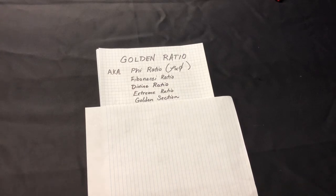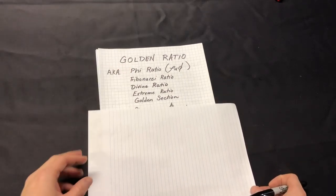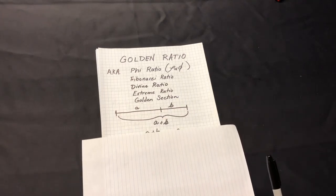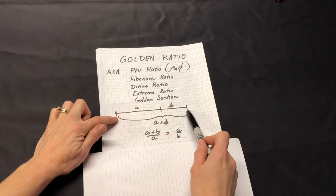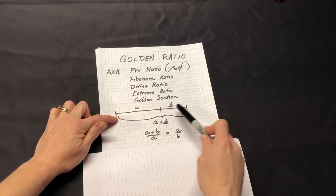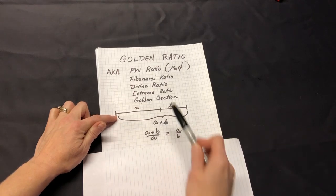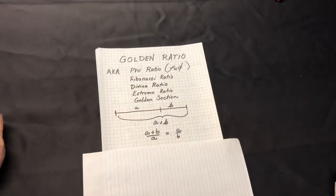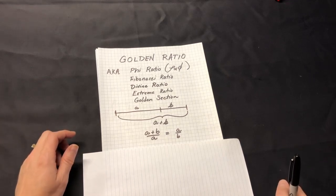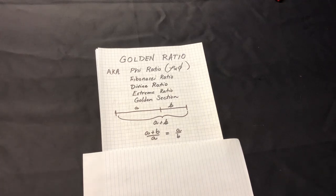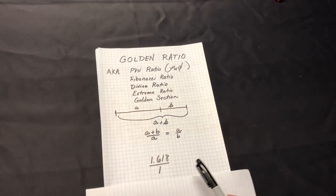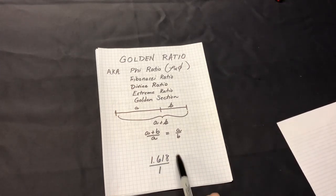Now let's talk golden ratio. Here are different names for the golden ratio. The most common is simply 'the ratio.' Here's how you draw out the golden ratio in visual form and here's the mathematical equation to describe it: the whole length over the longer side will equal the longer section over the shorter section. This equation is solvable for a number — you can find that at Khan Academy. But the end result is 1.618 over 1. This is the golden ratio.